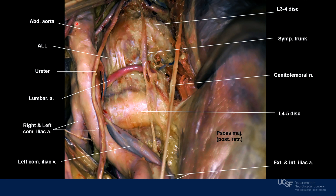This is an oblique view of the anterior portion of the lumbar region, showing the anterior longitudinal ligament attached to the vertebral bodies. We see the lumbar arteries that arise from the posterolateral aspect of the aorta and run laterally along the center of the anterior and lateral aspect of the vertebral bodies. We identify the ureter, the sympathetic trunk, and laterally the genitofemoral nerve. We see the intervertebral space with the L4-L5 disc, the left common iliac vein, and external and internal iliac vessels. A retraction over the psoas major exposes more of the anterolateral portion of the vertebral bodies.